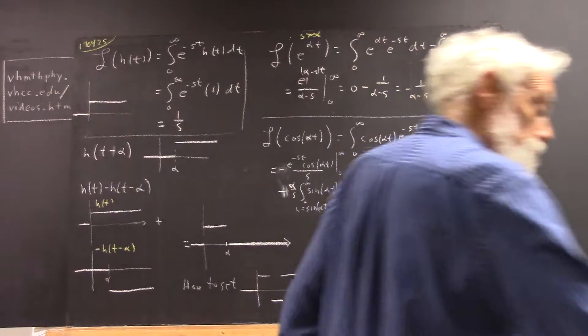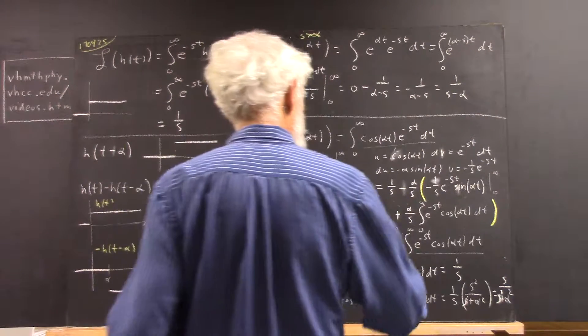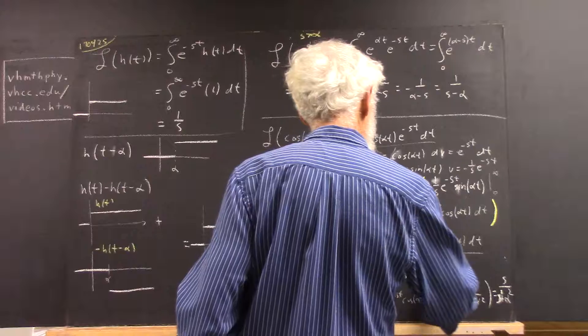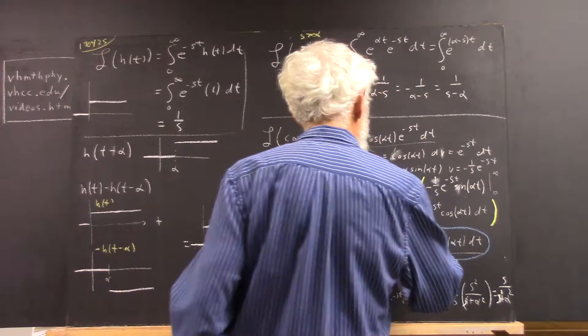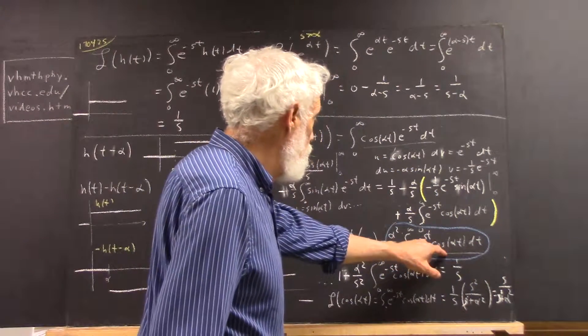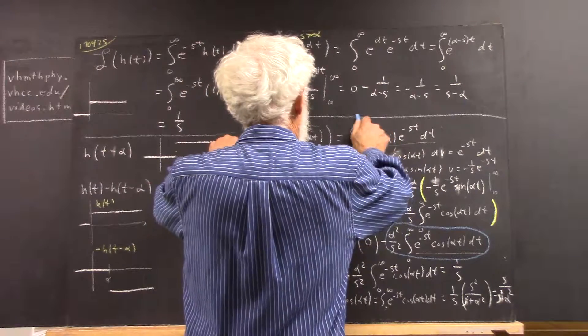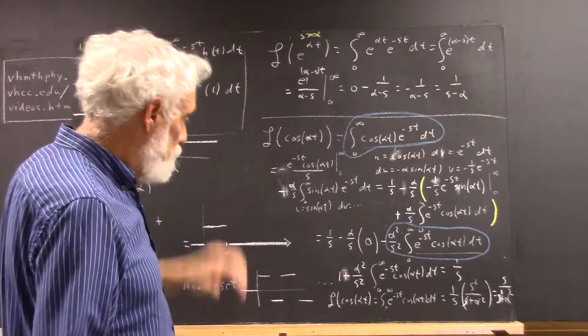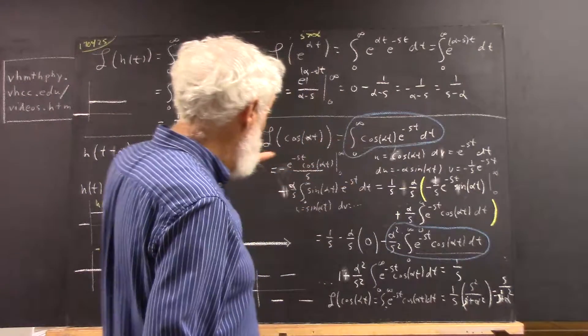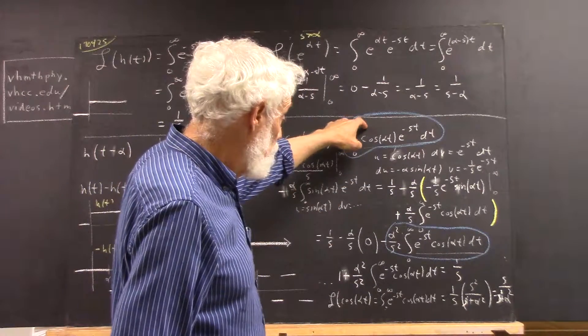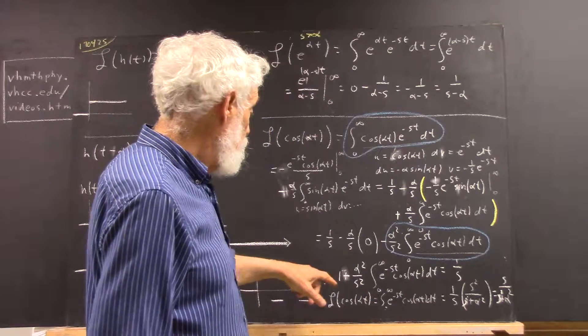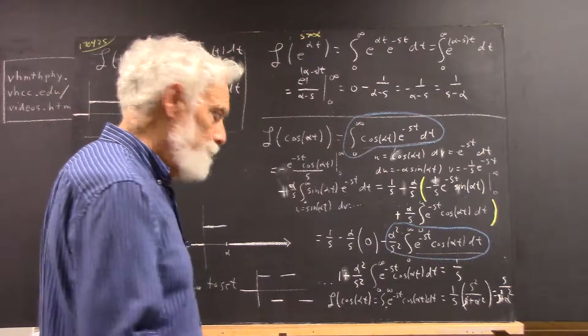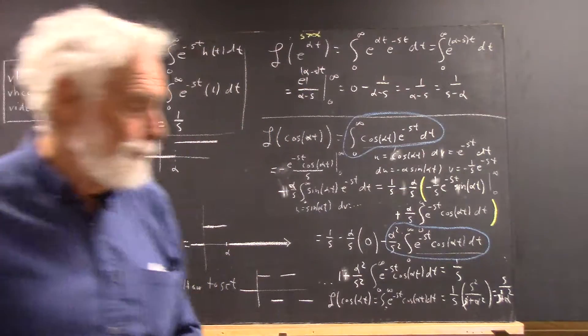But, at this point, this is a multiple of the thing that we're trying to integrate. So, we add this term to both sides where this is one side and this is the other. And, we get one plus alpha squared over s squared.